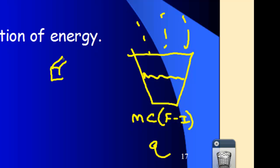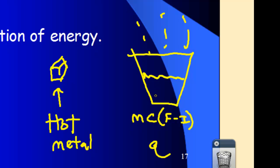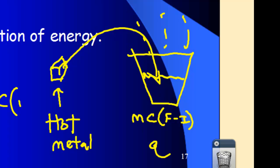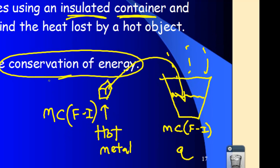If you take a piece of iron and heat it to a high temperature, then take that hot metal and put it in the water — if you know the mass of the hot metal, the specific heat of the hot metal, and the final temperature, you could use MC delta T to do a calculation. The idea of calorimetry involves the conservation of energy: energy cannot be created nor destroyed, just like the conservation of mass. So the total amount of energy in our system and surroundings is constant.